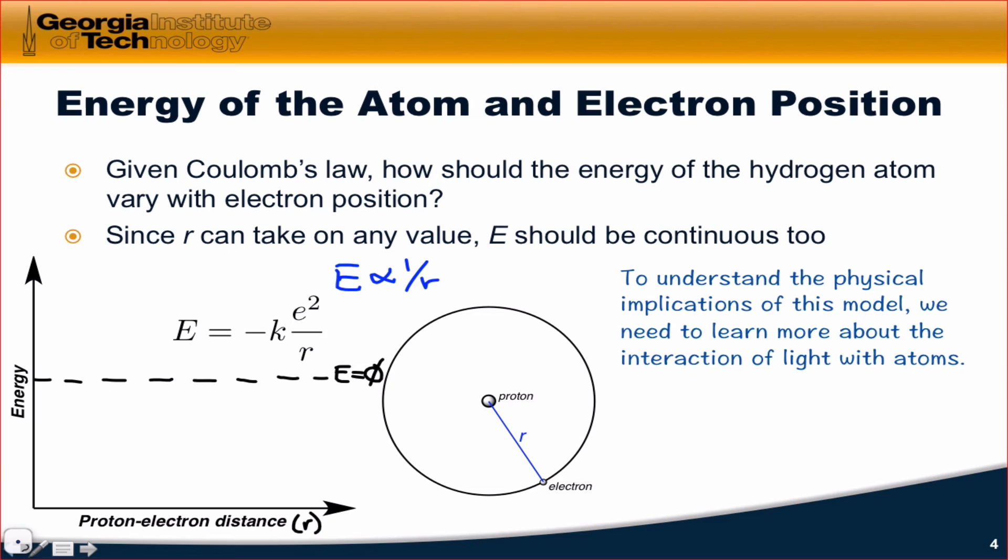And so at zero proton-electron distance, as r goes to zero, the energy is going to go to negative infinity. So I won't show that here, but I'll show the function kind of coming up above the lower cutoff.